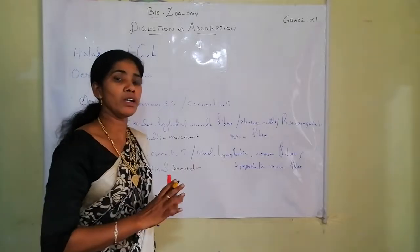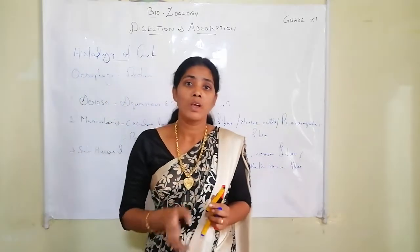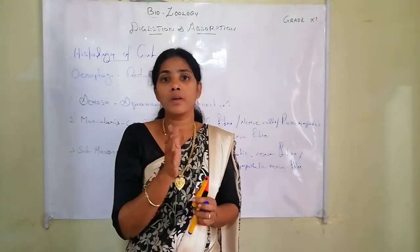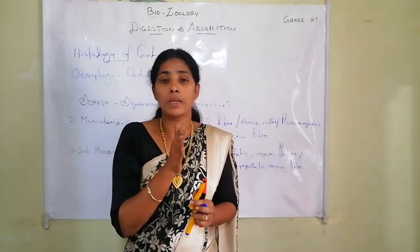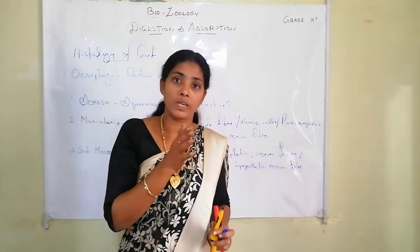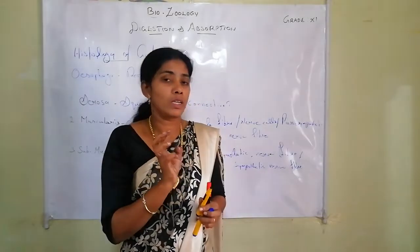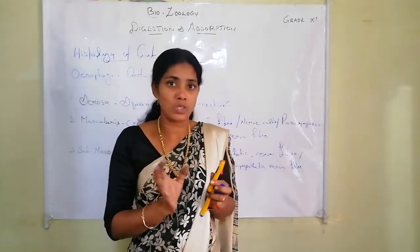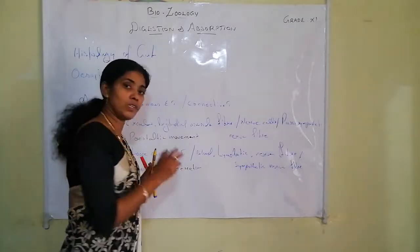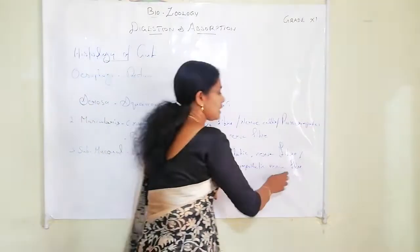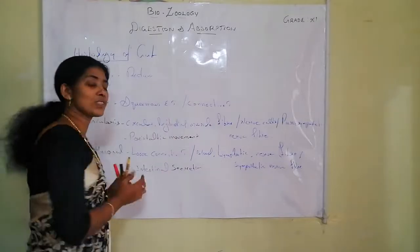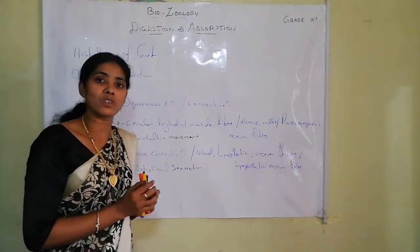The intestinal mucosa secretes intestinal juice, and this secretion must be maintained at a proper level — it should not exceed or be reduced. This is controlled by the sympathetic nerve fiber present in the submucosal layer.